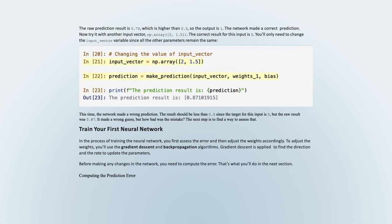Now try it with another input vector, np.array([2, 1.5]). The correct result for this input is 0. You'll only need to change the input_vector variable since all other parameters remain the same. This time, the network made a wrong prediction. The result should be less than 0.5 since the target for this input is 0, but the raw result was 0.87. It made a wrong guess — but how bad was the mistake? The next step is to find a way to assess that.